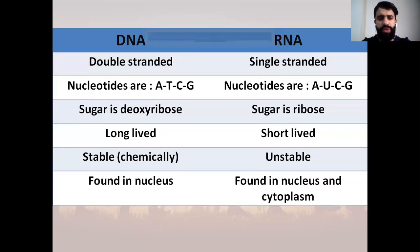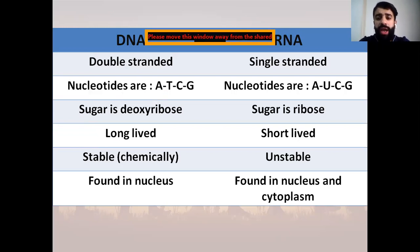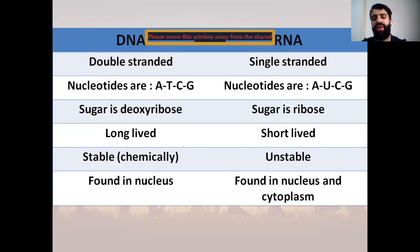The next table shows the comparison between DNA and RNA. DNA is double-stranded while RNA is single-stranded. DNA nucleotides are A, T, C, and G, while RNA nucleotides are the same except T is substituted by U — thymine is substituted by uracil, so they are A, U, C, G. The sugar in DNA is deoxyribose while in RNA it is ribose. DNA has a long lifespan while RNA has a short lifespan. DNA is chemically stable while RNA is unstable. DNA is found in the nucleus, whereas RNA can be found in the nucleus and in the cytoplasm.